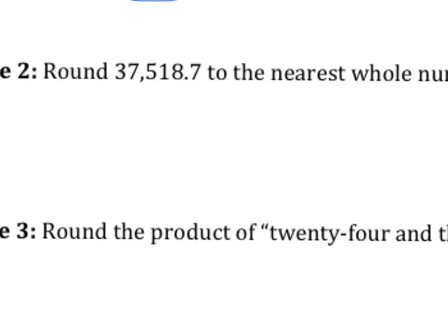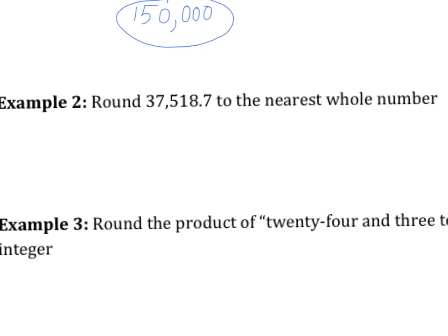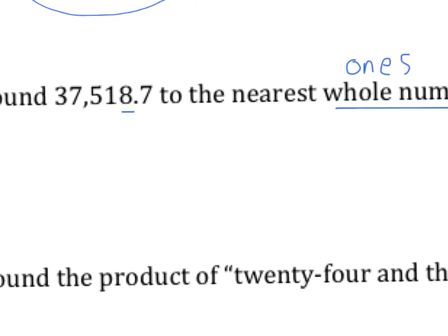This next one: round to the nearest whole number. Whole number is what place value? You should have said the ones place value. So again, the rap — underline the place value, which is the ones. I'm going to zoom in a little bit. Draw an arrow next door. Ask that number, are you bigger than four? Is seven bigger than four? Yeah, it is. So the number is going to say yes, so if the number says yes, then add one more. We only add one to the number that's underlined.